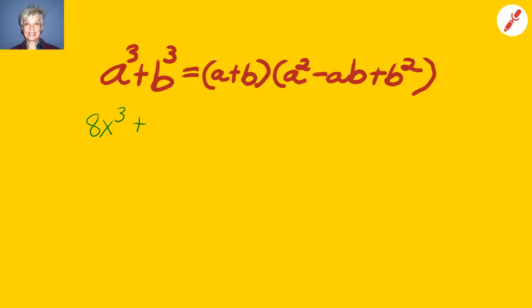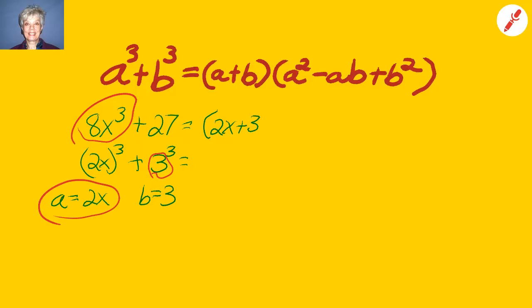And here's how you use the formula. Suppose you have 8x cubed plus 27. Well, 8x cubed is 2x cubed, that quantity, and 27 is 3 cubed. So, now our a in the formula is 2x, and our b in the formula is 3. So, everywhere you see an a, put a 2x. And everywhere you see a b, put a 3.